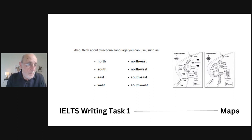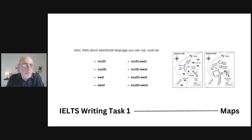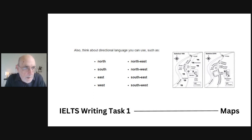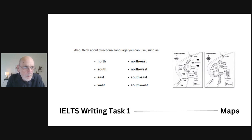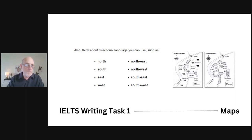When dealing with maps, here's a vocabulary tip: think about directional language — north and south, east and west, northeast, northwest, southeast. Usually when you have a map, there is a compass on the map to tell you which way is north and south. Just be aware that your vocabulary will include some of this directional language.